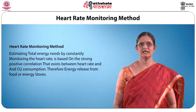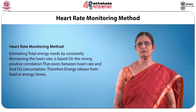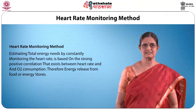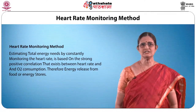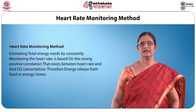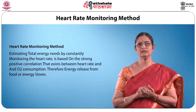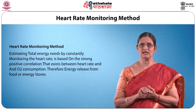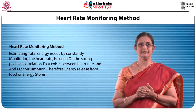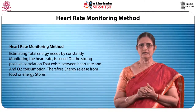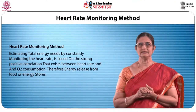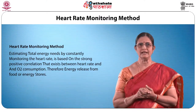The second method is heart rate monitoring. Estimating total energy needs by constantly monitoring the heart rate is mainly based on the strong positive relationship between heart rate and oxygen consumption, whereby energy is released from food or energy stores. The relationship between heart rate and oxygen consumption is explained by the fact that oxygen needed to release energy from food is transported through the blood. Increased oxygen consumption requires increased blood flow powered by an increase in heart rate. During the preliminary study, heart rate and oxygen are both directly monitored while the subject undertakes a series of activities, and used for total energy requirement measurement.